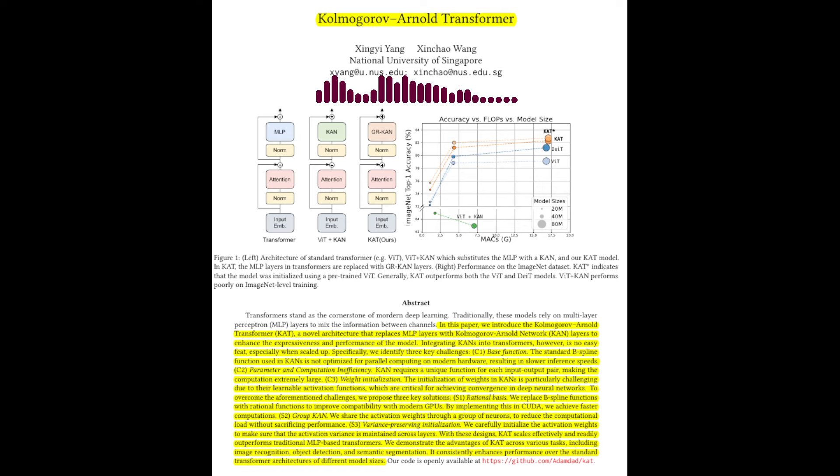Second, rational functions can approximate a wider range of functions, including those with singularities or sharp variations, more efficiently and accurately than polynomials. Third, rational activations have already been successfully used as activation functions in neural networks.